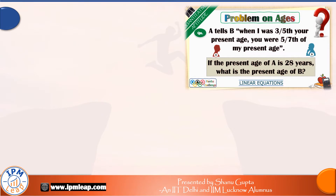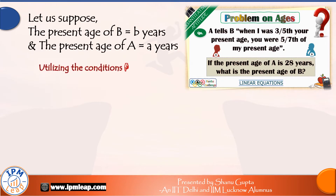So friends, let us discuss. In the question, the present age of A is given and we have to find the present age of B. So, let us assume the present age of B as B years. We could have taken X and Y as their ages, but taking the variable B for B's age will cut down on our confusion. And A's age, let us denote with the help of variable A.